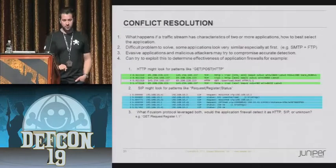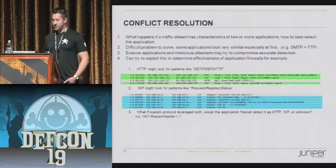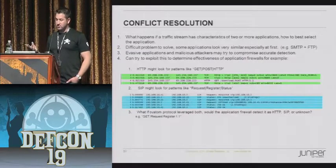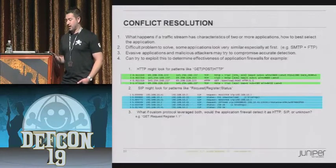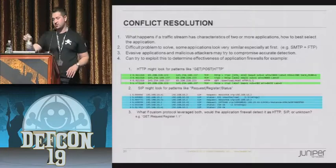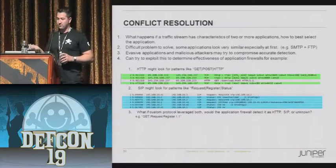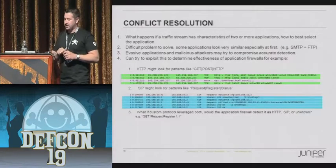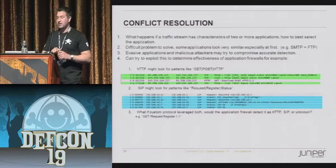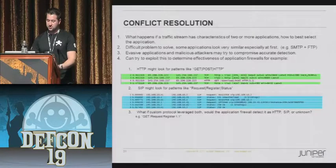A really interesting thing is called conflict resolution. What happens if you have an application that matches more than one application? SMTP and FTP are very similar and could potentially match each other's patterns - so how do you resolve conflicts in the actual application detection? That could potentially be used to an attacker's benefit. It'll really just vary by implementation. A lot will just fall back on the port and say if they detected this pattern and expect this, there's kind of a default port, so it must be HTTP. Some will just list it as an unknown application, or might just pick one of the two in order of precedence or likelihood. So conflict resolution is something that could potentially be leveraged for both good and bad purposes.